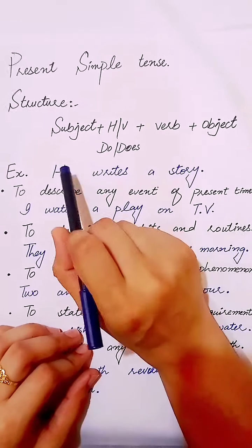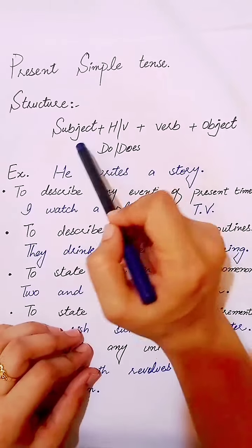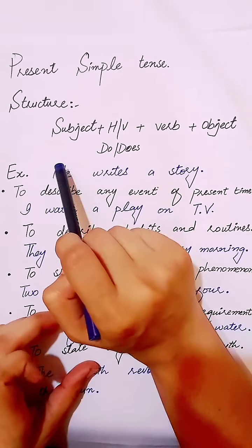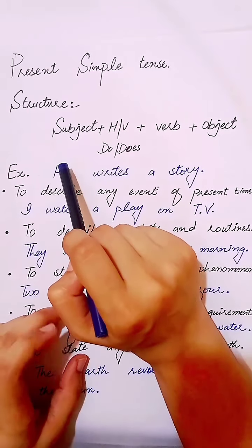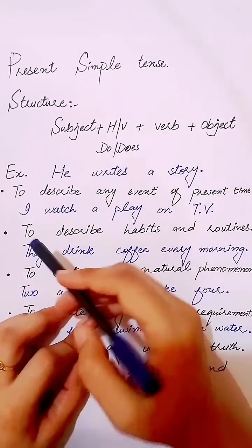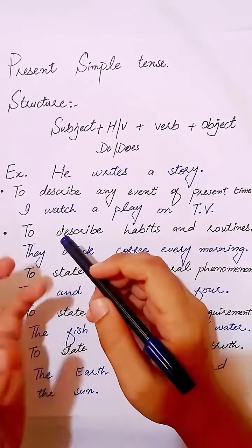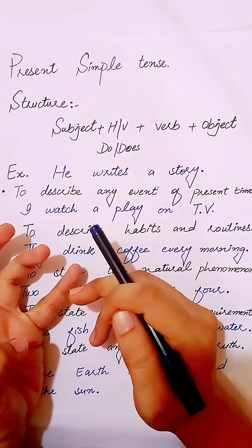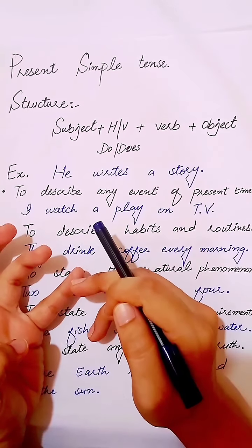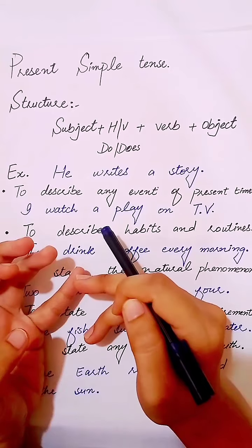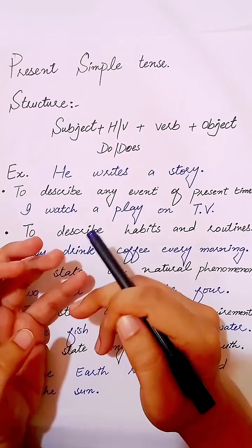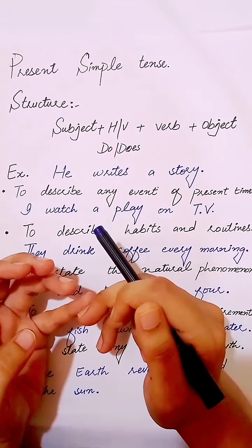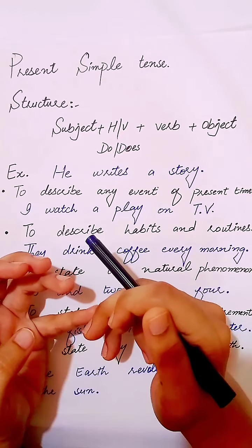Now, the structure of present simple tense for a simple sentence: first we write subject, then helping verb, then verb, then object. In this tense we use two helping verbs — do and does. With singular pronouns or subjects we use 'does', like he, she, it. With plural pronouns or subjects we use 'do', like they, you, we — and also with 'I'.